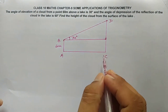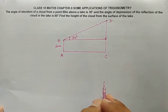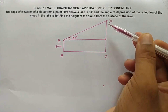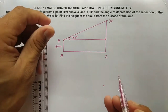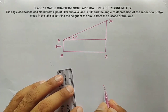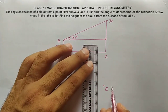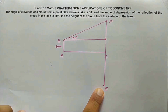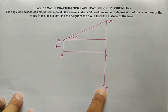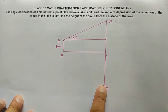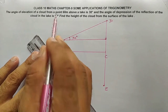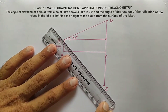The cloud's reflection in the lake is at point E. Whatever height the cloud is above the lake, that same depth is taken below the lake for the reflection. So the reflection of cloud D is at point E. From point B, the angle of depression to reflection E is 60 degrees — this is your ray of sight downward, and this angle is 60 degrees.